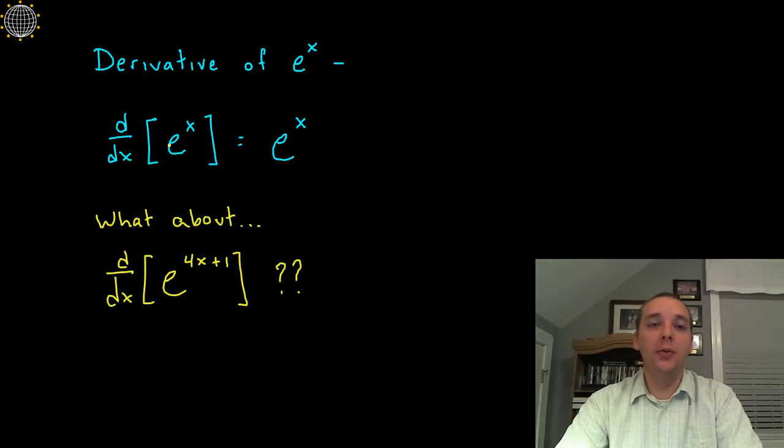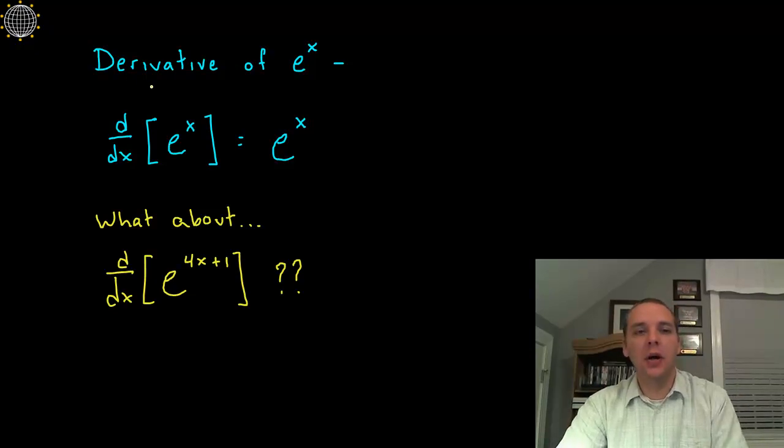So in the last video we took a look at the derivative of the exponential function, but it was a more long drawn out video explaining why the derivative was what it was. Well we're not going to do that this time, this time it's going to be a little bit shorter. We're just going to know or say that the derivative of e to the x is e to the x, alright so we know that much.